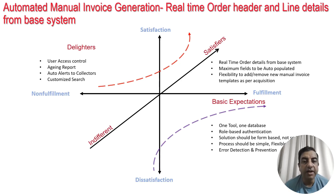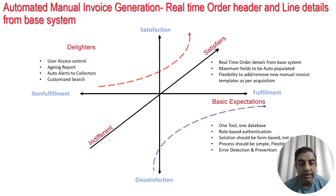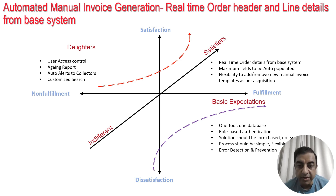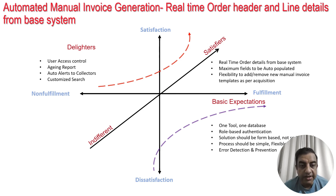The team then performed a Kano analysis, creating a Kano model to identify customer requirements for the automated tool. They divided these requirements into three categories: basic expectations, satisfiers, and delighters.